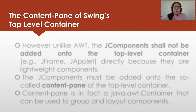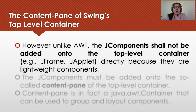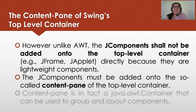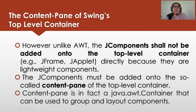We have here the content pane of Swing's top-level container. Unlike AWT, the J-Components shall not be added onto the top-level container such as J-Frame or J-Applet directly because they are lightweight components. In our previous discussions on AWT, we directly added the components to the frame, but using Swing we need to first add the components to the container — this is what we call the content pane of the top-level container. The content pane is in fact a Java.awt.Container that can be used to group and lay out components.